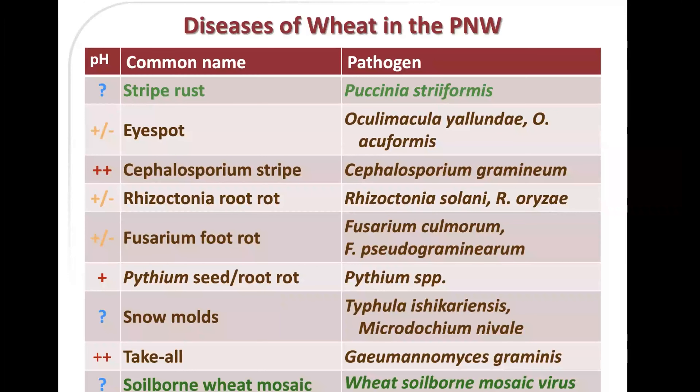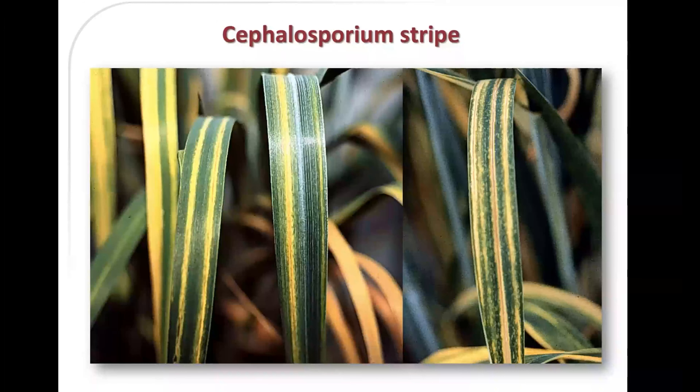For diseases like cephalosporium stripe, pythium seed and root rot, and take-all, we have very good data on the effect of pH. For cephalosporium stripe, as pH decreases and soil becomes more acid, the disease becomes more severe. For take-all, it's the opposite — as pH increases above neutrality, disease becomes more severe. Pythium seed rot shows a weaker trend. Cephalosporium stripe is a vascular wilt disease, and it's common for vascular wilts like fusarium wilts to become more severe as soil becomes more acid.